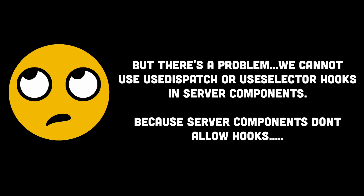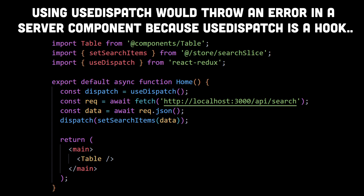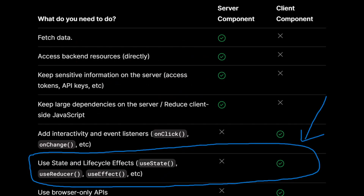The nested child elements could access the data using the useSelector method provided by Redux Toolkit, but the problem is the component calling the API endpoint is a server component. In order to store the data returned from the API into the Redux state, we would have to use the useDispatch hook in the server component, which causes an issue.